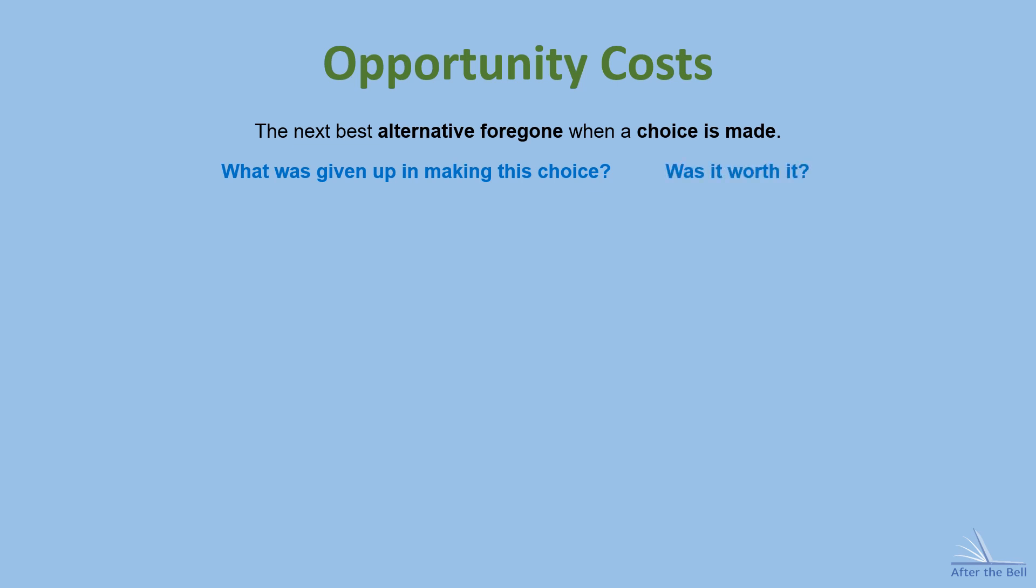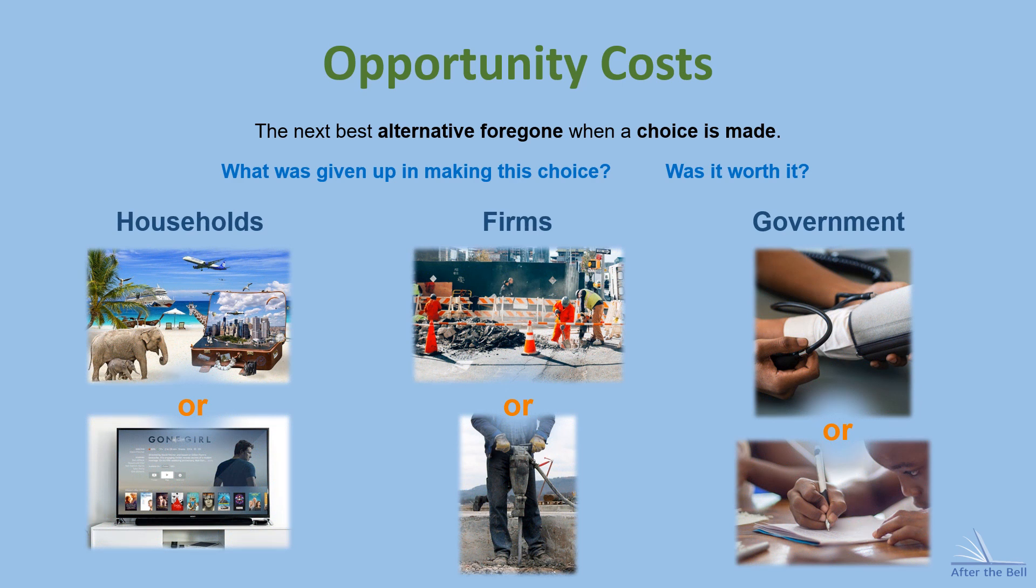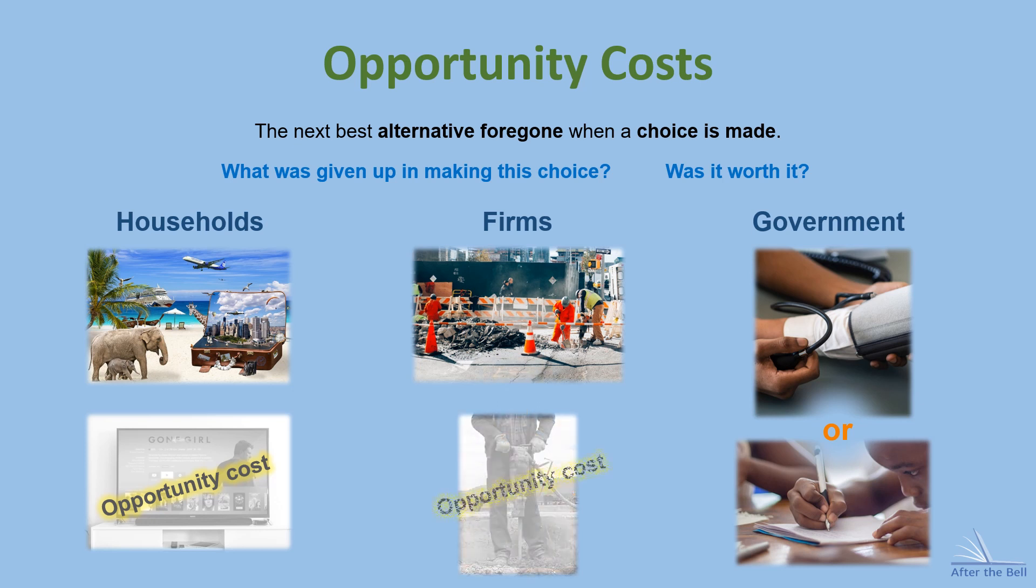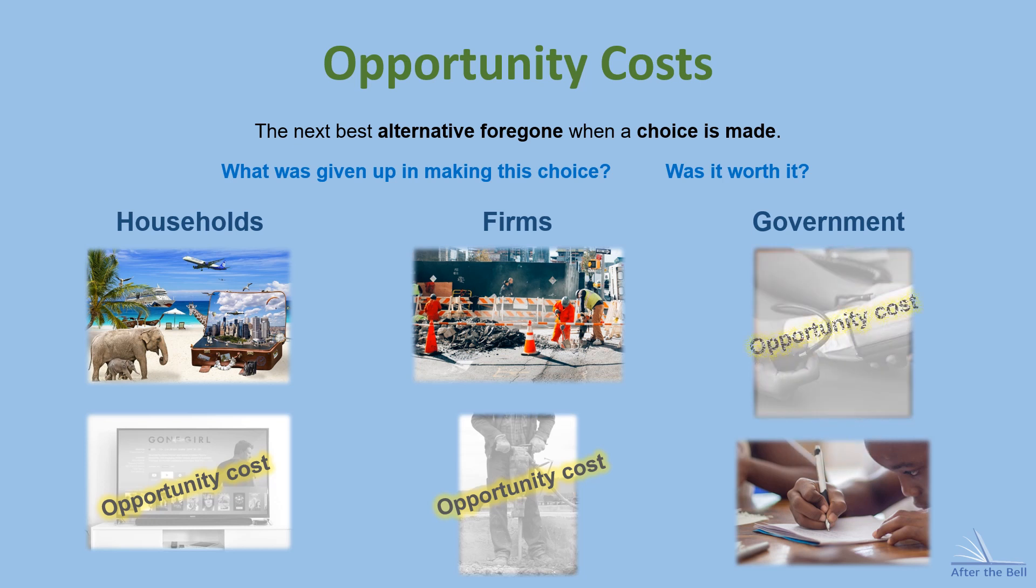Let's look at the opportunity cost of the trade-offs we mentioned before. If the household decides to take the holiday they have to give up the new TV and so this is the opportunity cost. If the firm decides to employ an extra worker, the opportunity cost is the output that their new equipment could have produced. And if the government puts more spending into education, the opportunity cost is that it gives up improvements that it could have made to health care and the benefits this could have brought to people's health.